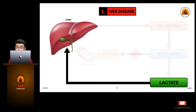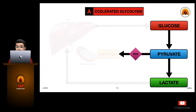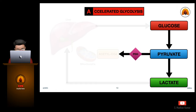Lactate is channeled to the liver for conversion back to glucose. If chronic liver disease exists, it may result in elevated lactate. Accelerated glycolysis can shift excess pyruvate toward lactate production. Glycolysis can be accelerated by increased metabolism through fever and sepsis, hyperthyroidism and thyrotoxic crises, or drugs such as adrenaline, epinephrine, and salbutamol, often resulting in elevated lactate.